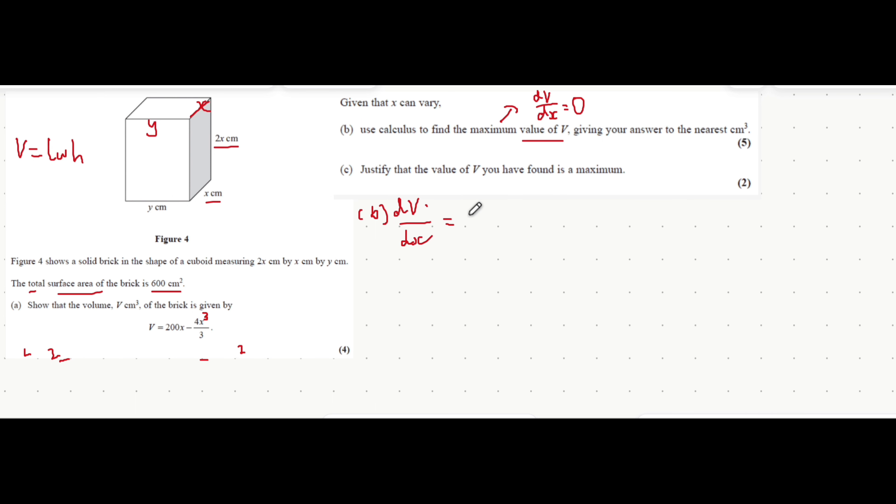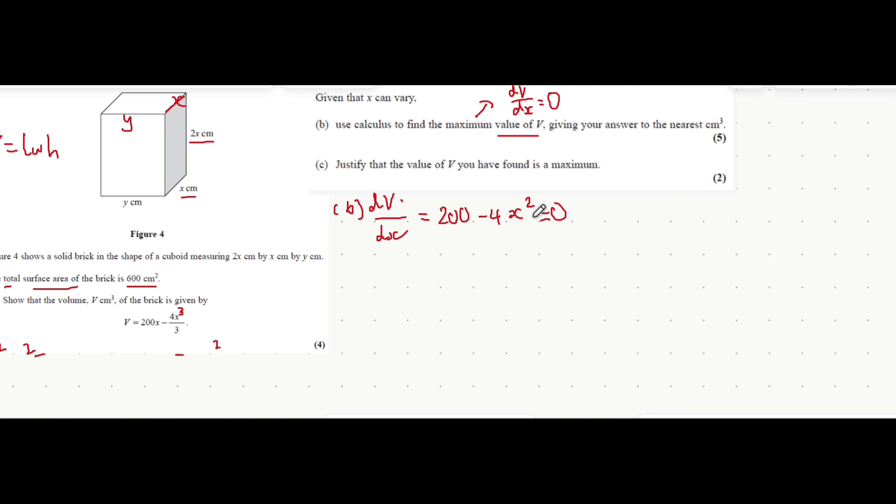You want to differentiate the expression v with respect to x. The differential of 200x is just 200. 4 thirds times 3 is 4, so that's minus 4x, and then you subtract 1 from the power, so minus 4x squared. We make that equal to 0 and we solve for x.